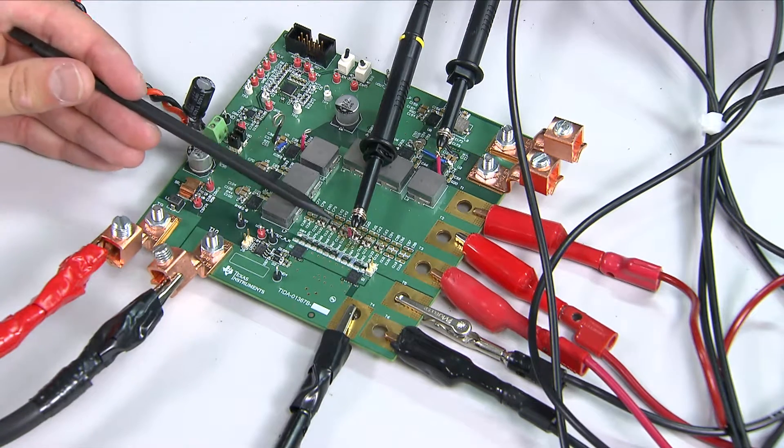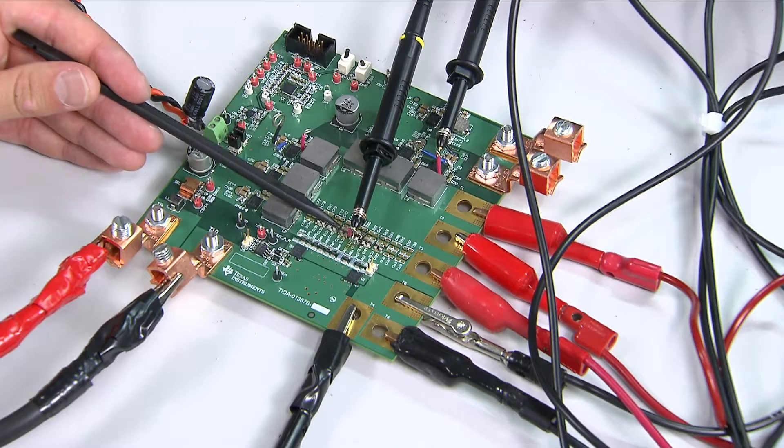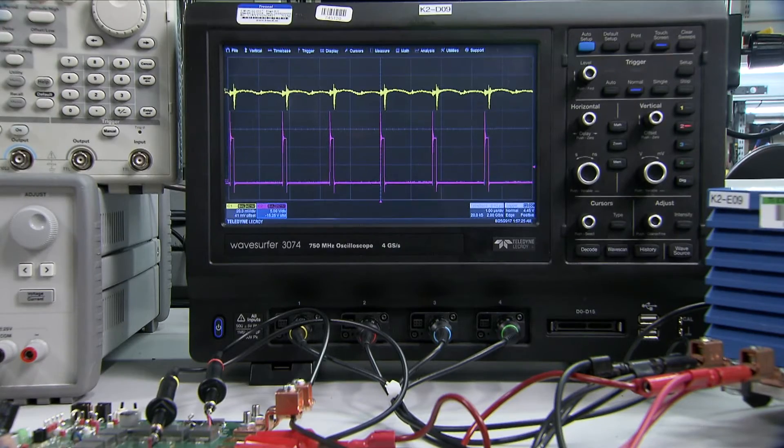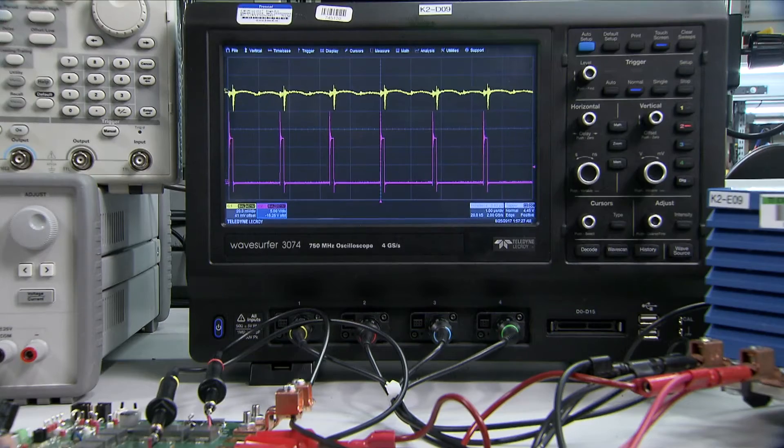Note the short connection between the probe ground and board ground. On the scope we can see that the ripple on V-out is aligned nicely with the phase node and there's no real noise on our signal.